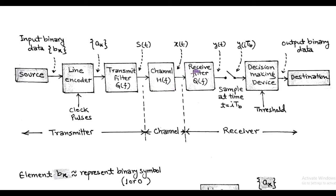After transmitting through the channel, the binary data is received by the receive filter, i.e. Q(f), which is a type of optimum matched filter. The output of the receive filter gets sampled at t equals i·T_b, where T_b is the bit duration.